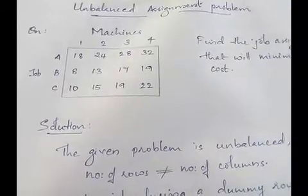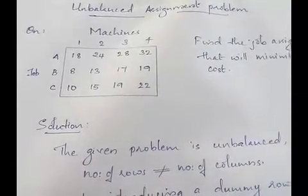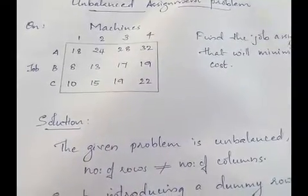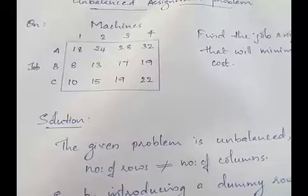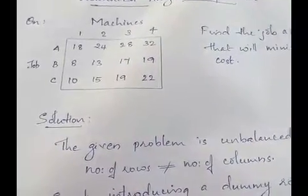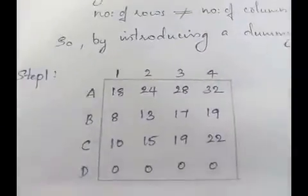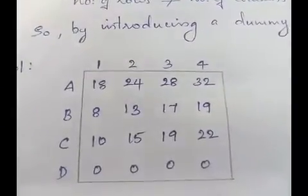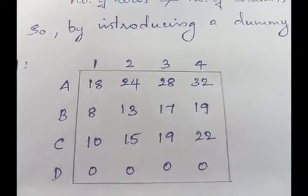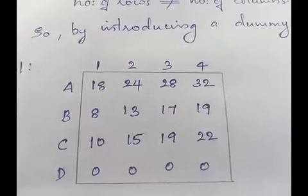To make the unbalanced assignment problem balanced, we have to introduce dummy rows or dummy columns. In this question, since the number of rows is less than the number of columns, we are going to introduce a dummy row with zero cost values. After introducing the dummy row, we now have 4 columns and 4 rows, so the table is balanced.